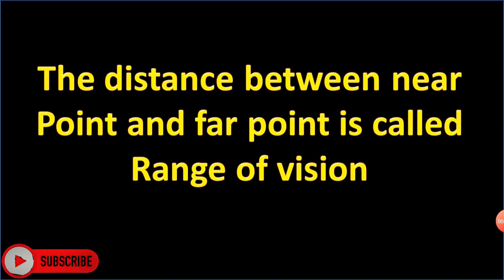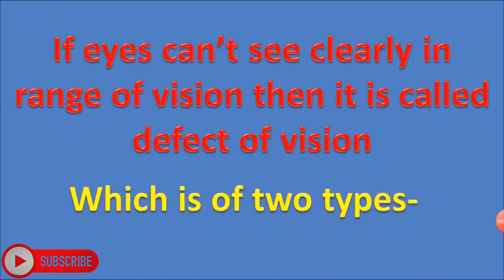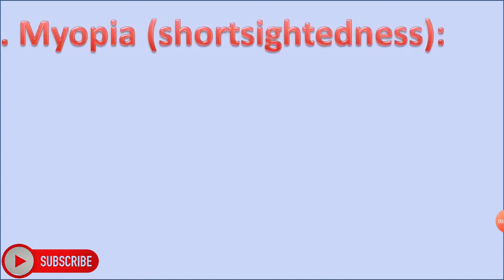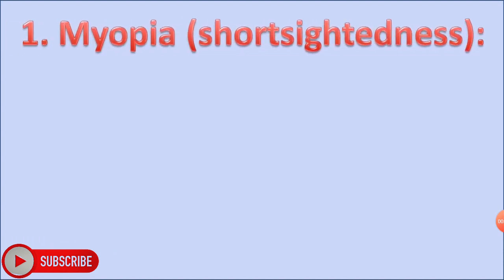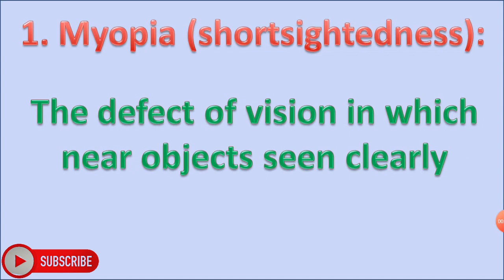The distance between the near point and far point is called the range of vision. If the eye cannot see clearly within this range of vision, it is called a defect of vision, which is of two types. The first is myopia, or short-sightedness — a condition in which near objects are seen clearly.